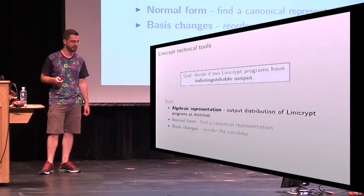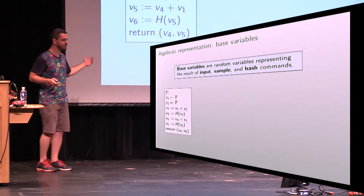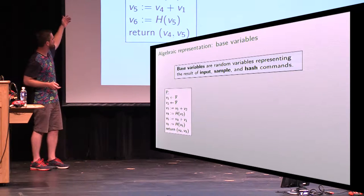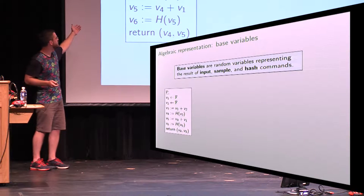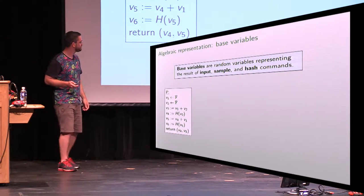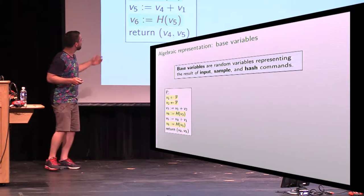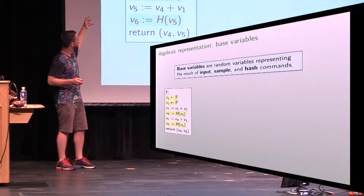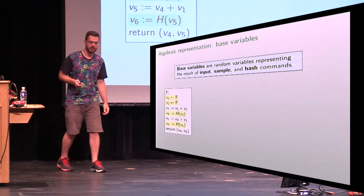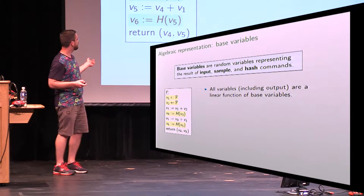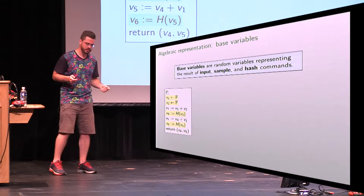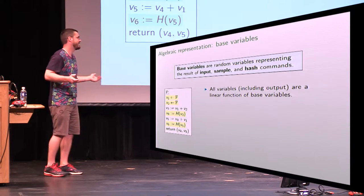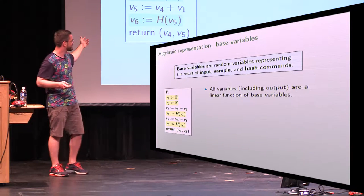I'll show you how to express a LinnyCrypt program as a matrix. Here's a simple program — there's no security here, it's just an instance of a LinnyCrypt program. We sample the finite field twice, take a linear combination, query the oracle a couple times, and return some stuff. But V3, V5, and the return variables are really just functions of four base lines in the program — the results of sampling the field or calling a random oracle. So everything else is a linear function of these base variables, and the whole program is a function of them.